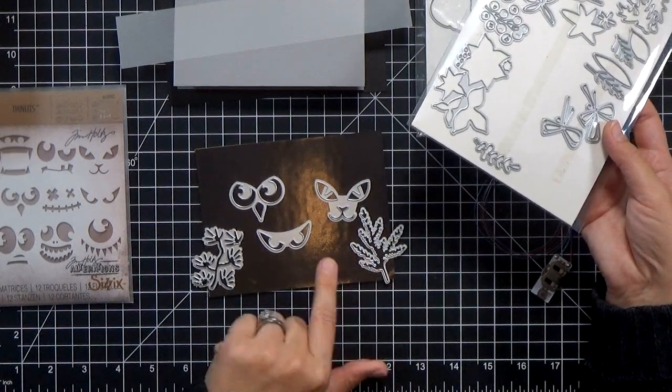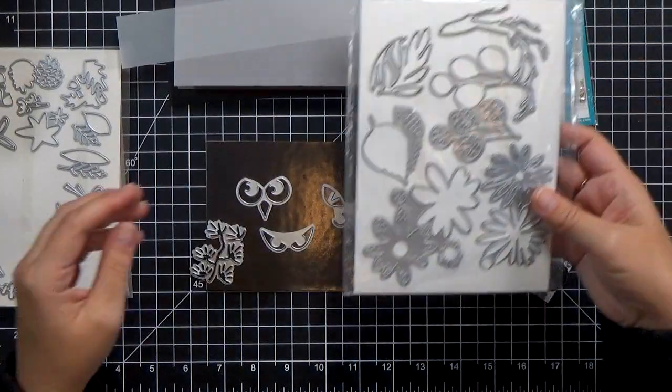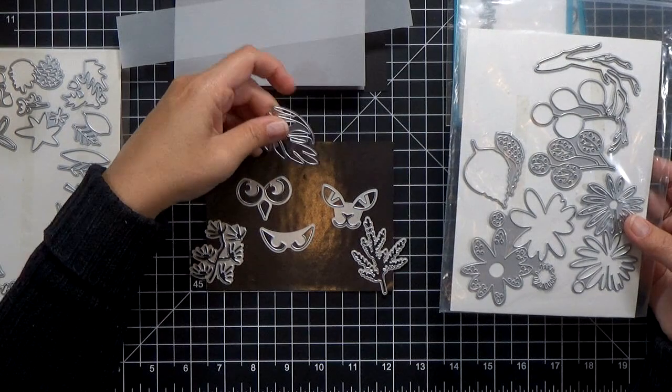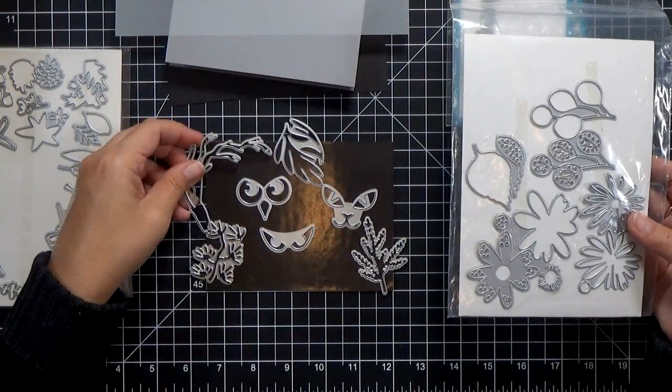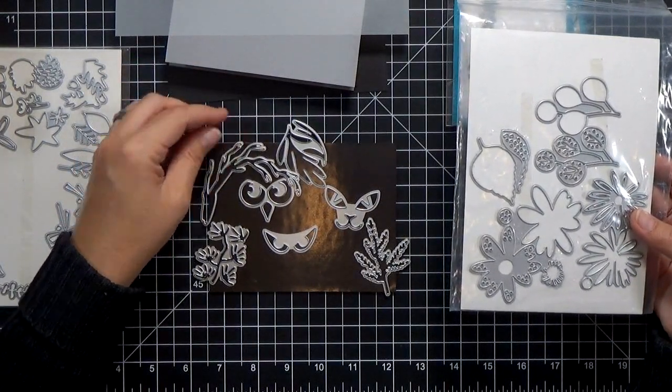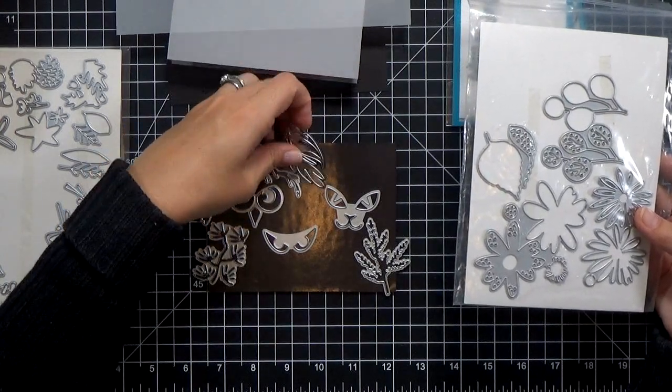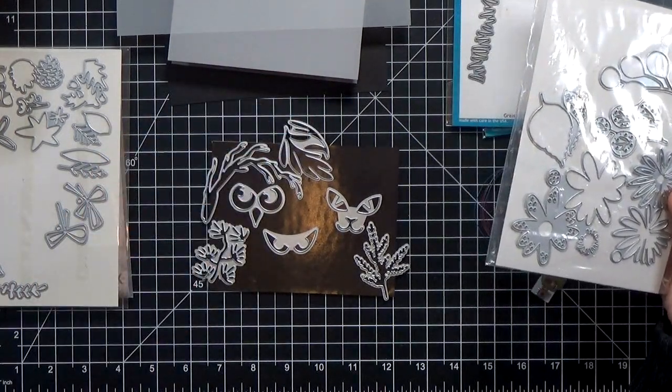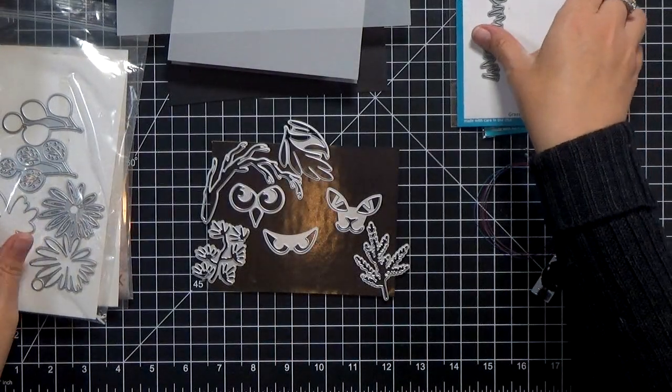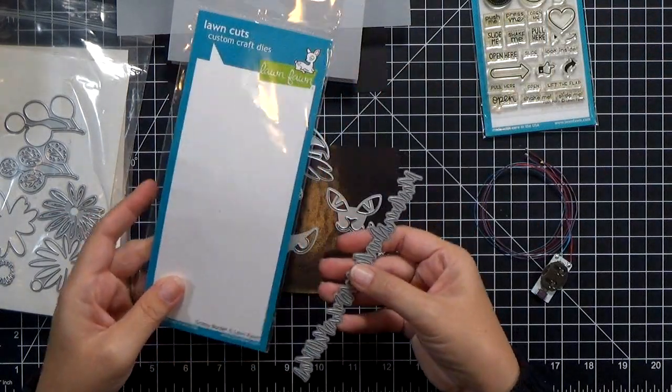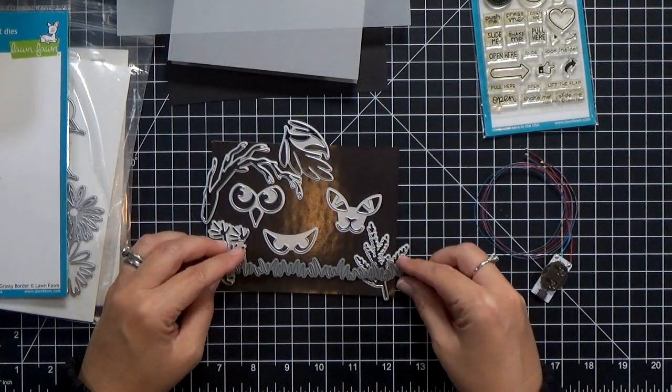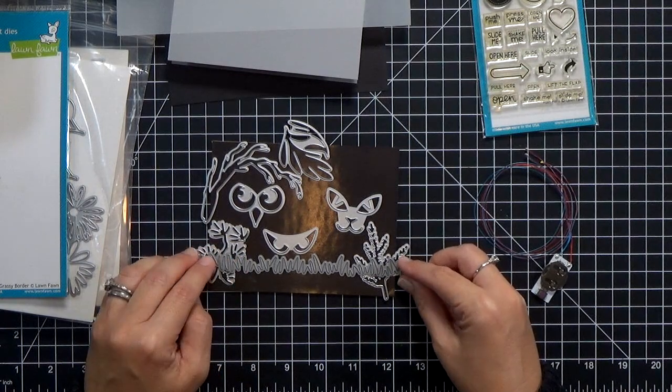The first three sets that I'm using are all Tim Holtz dies. There's the Spooky Eyes, I've got the Funky Festive floral pieces, and then the Large Funky Florals. I'll have links to all of those down on my blog as well. And then I've grabbed this Lawn Fawn grass border here.